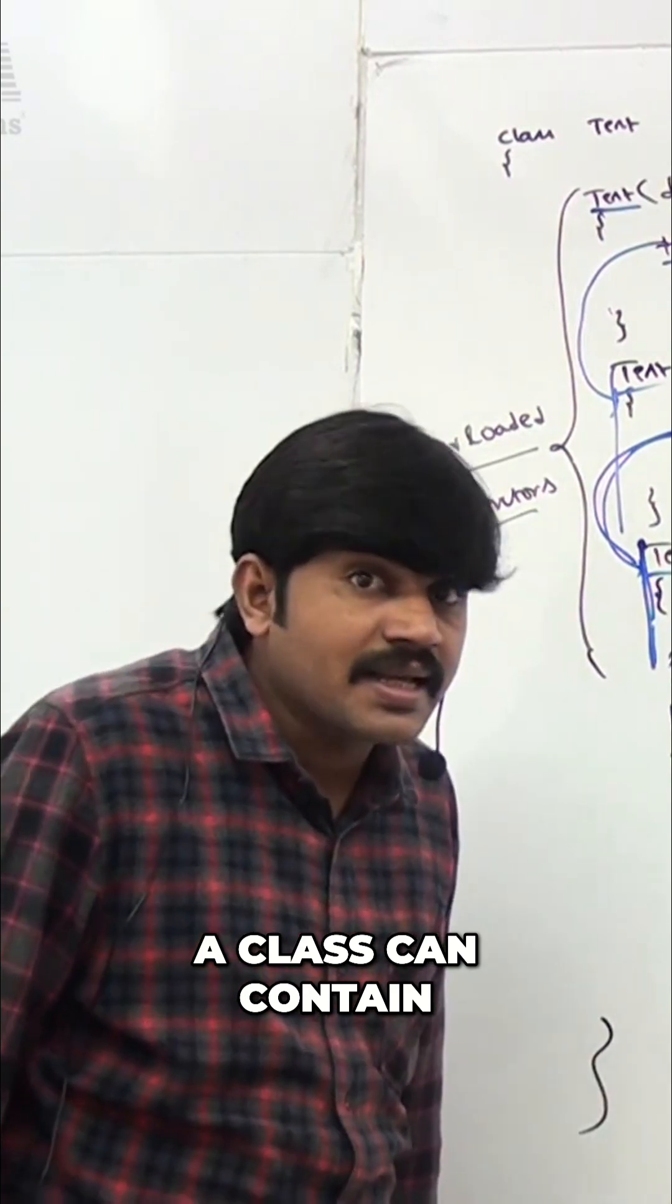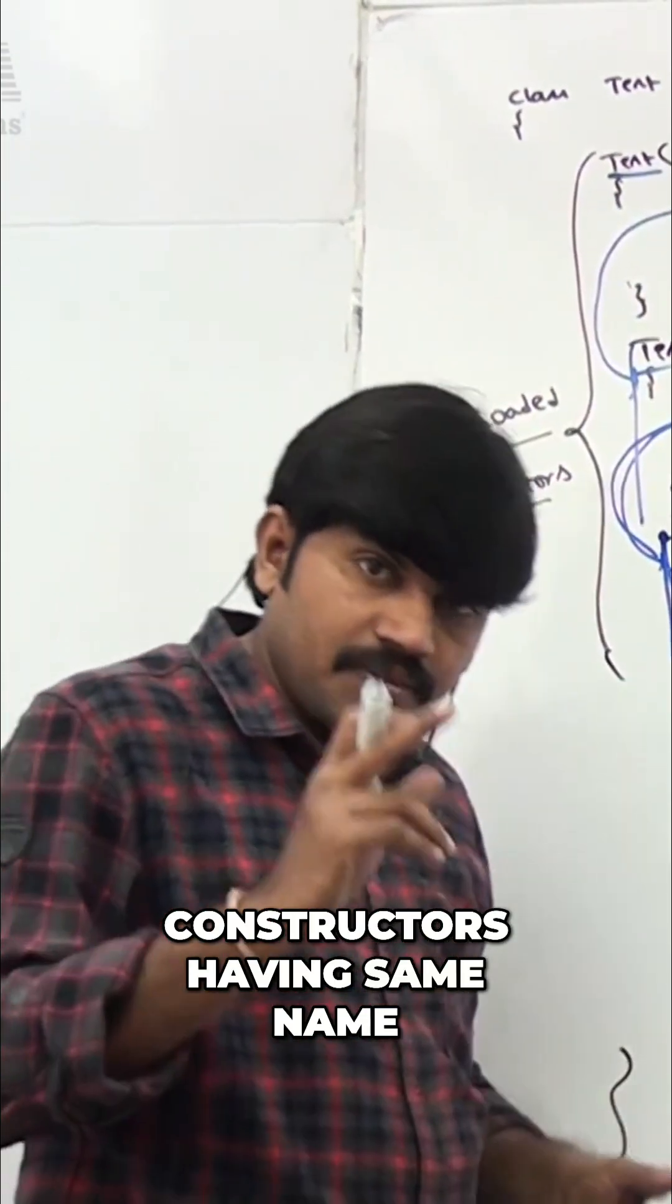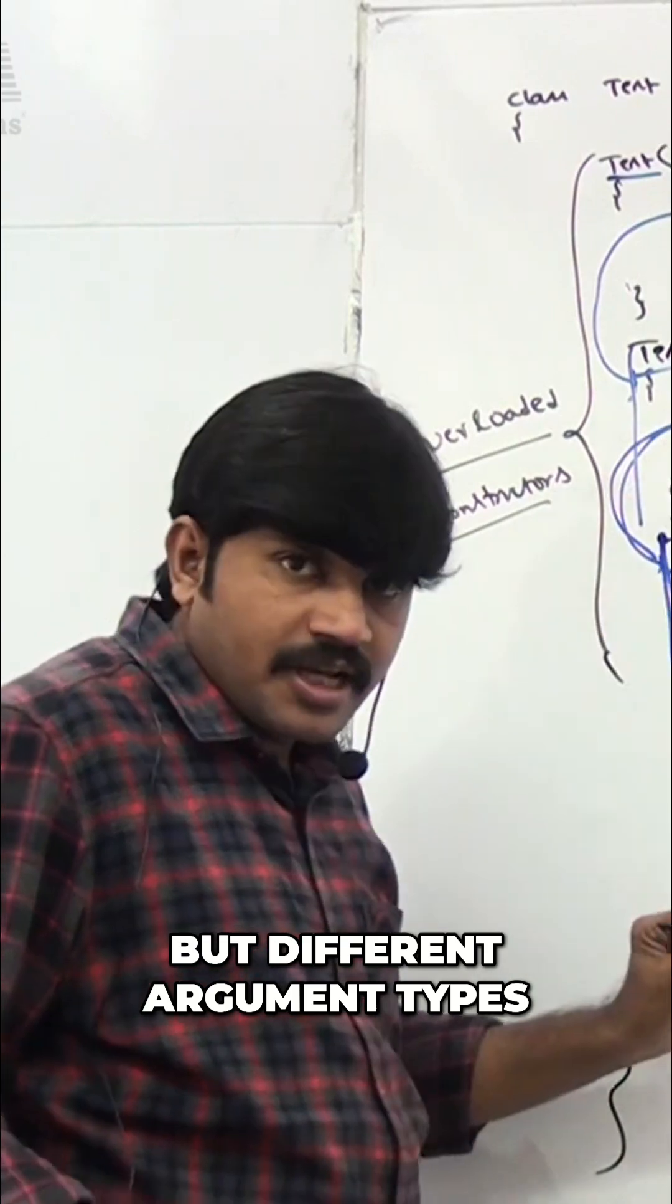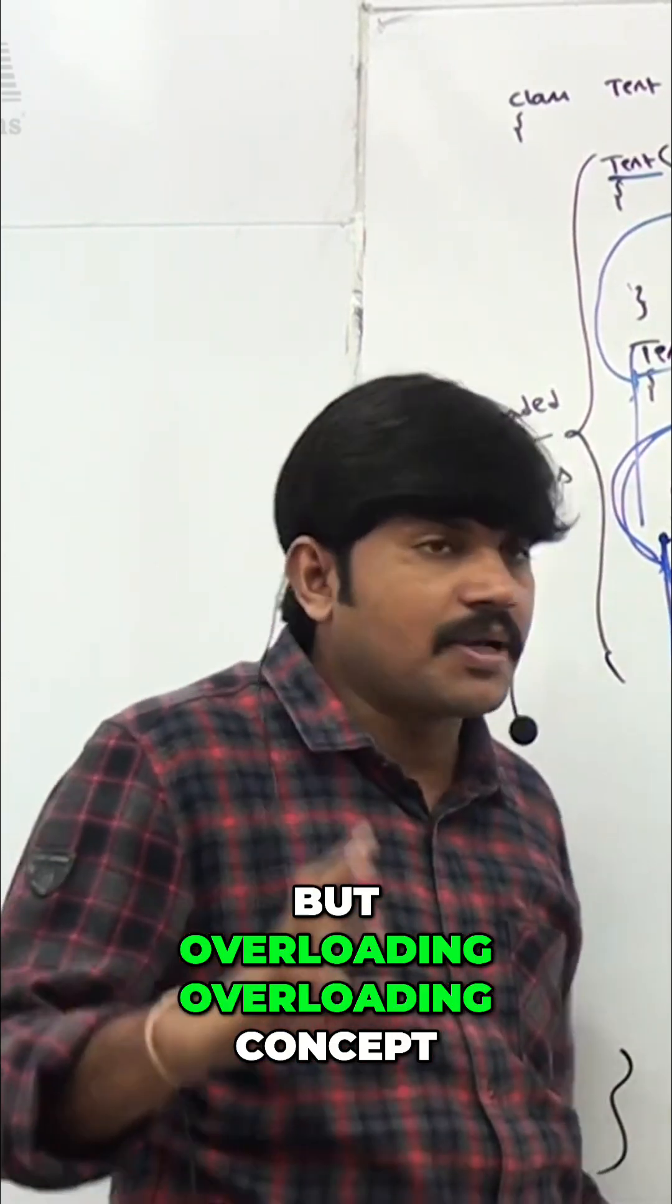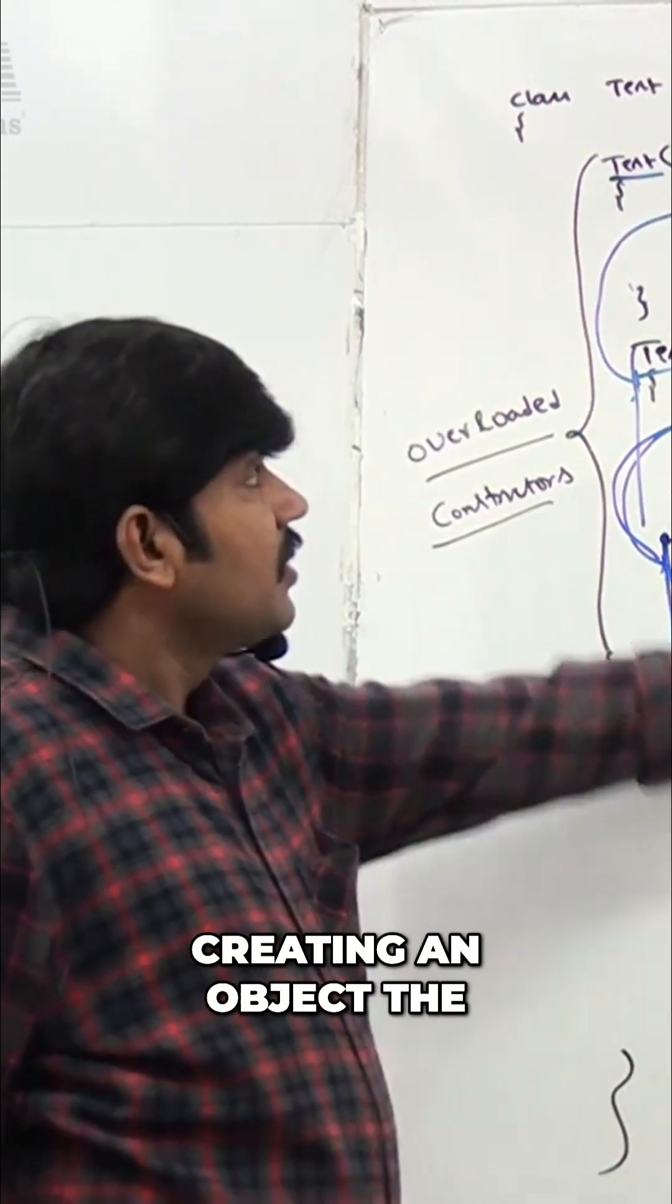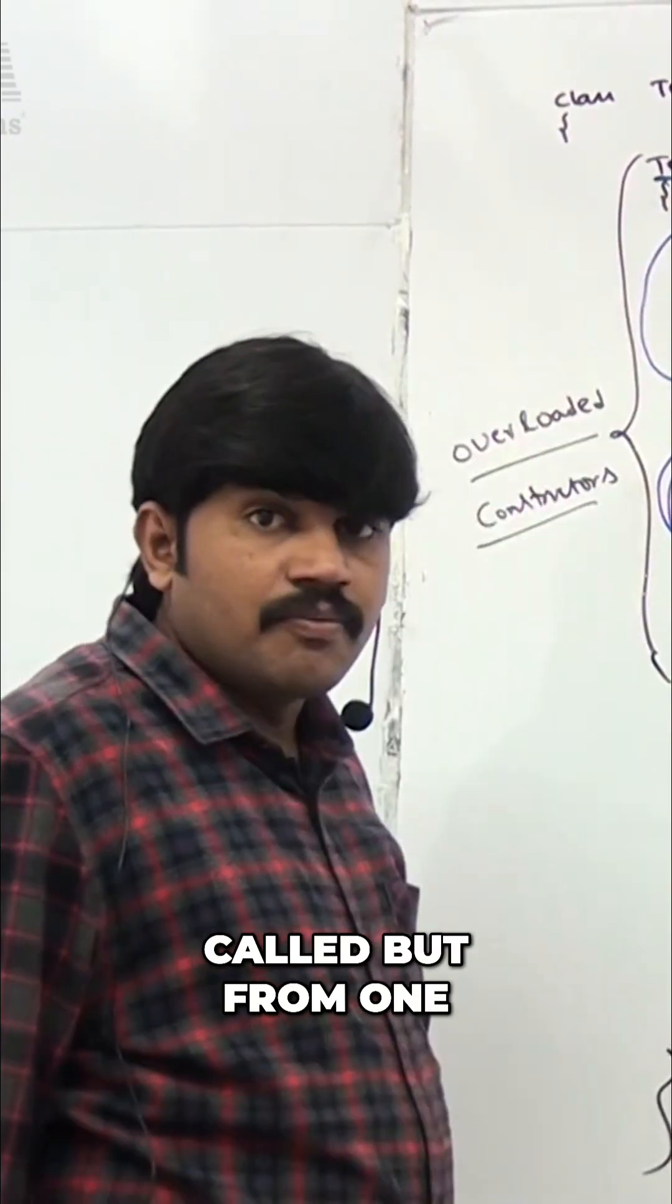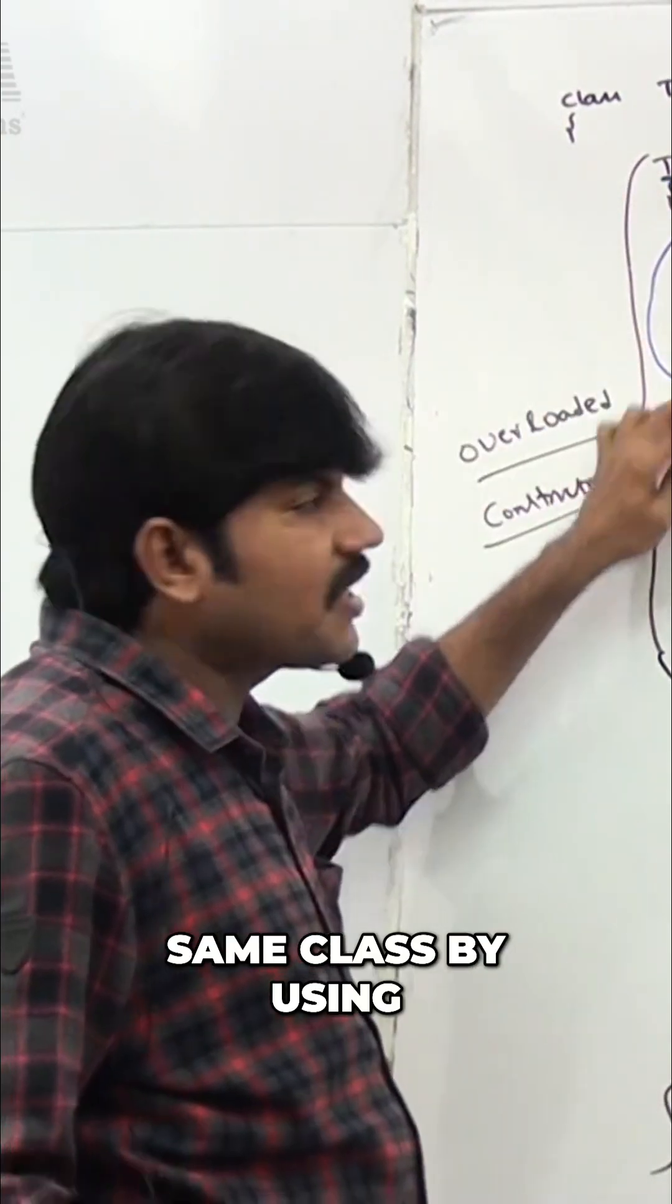A class can contain multiple constructors. All these constructors have the same name but different argument types - this concept is nothing but overloading. Overloading concept is applicable for constructors. Whenever you are creating an object, the corresponding constructor will be called. But from one constructor, how to call another constructor of the same class? By using 'this'.